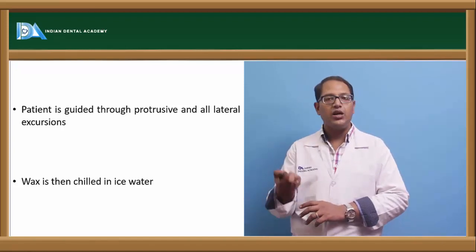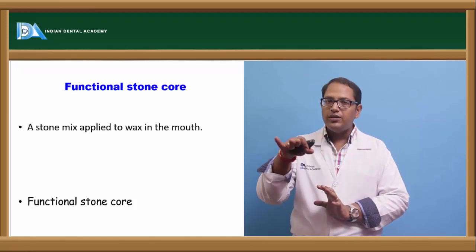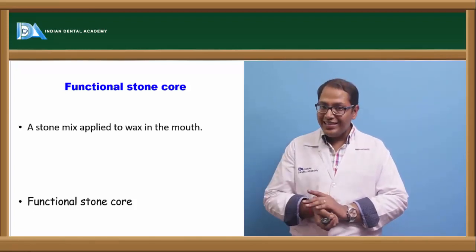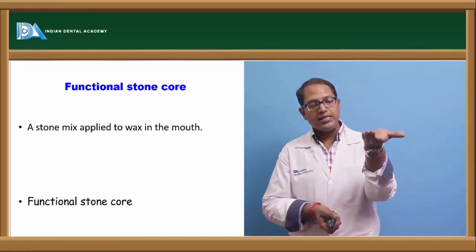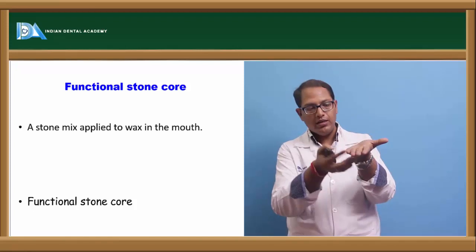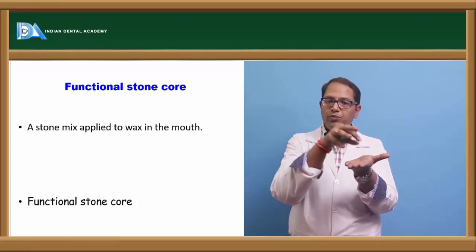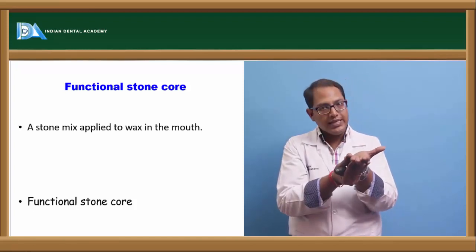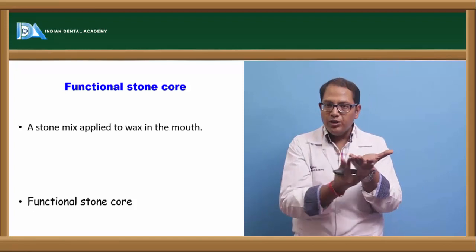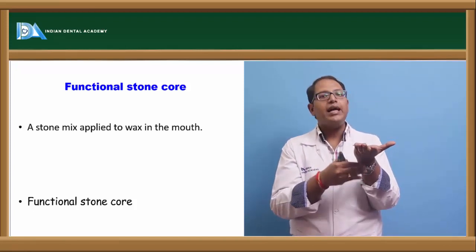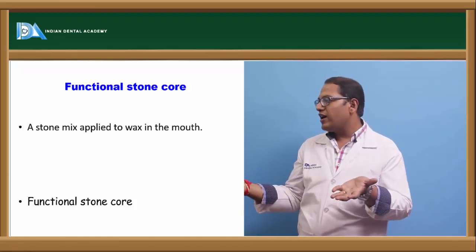After the wax is hard, you take it out and a stone mix is applied onto the functionally generated path created by the maxillary teeth — onto that surface, you add the stone mix, and a functional stone core is created. The lower imprint went one third into the wax, and all movements of the maxillary teeth occurred. Stone is poured on the lower side — creating a positive replica of the natural teeth or crowns of the mandible — and this is called the functional stone core.